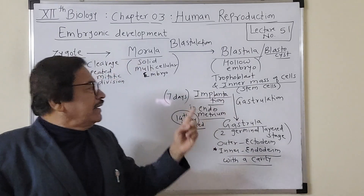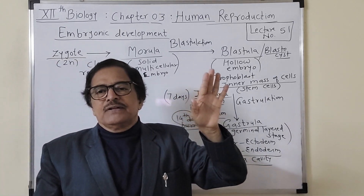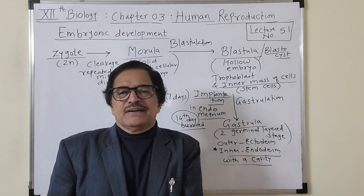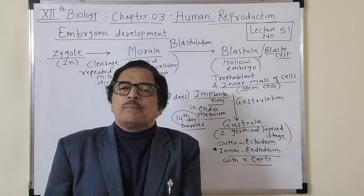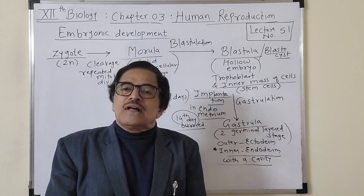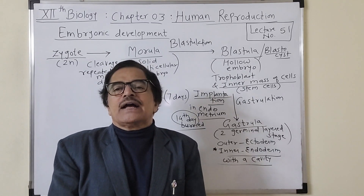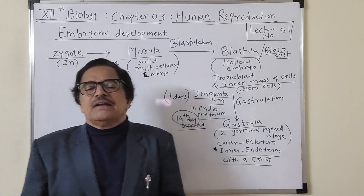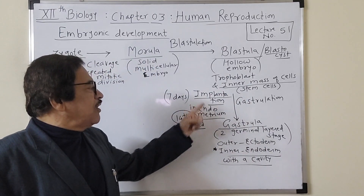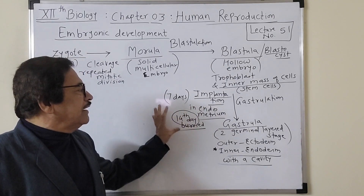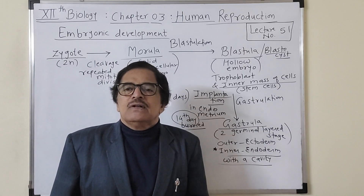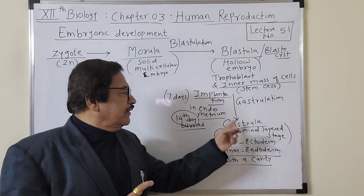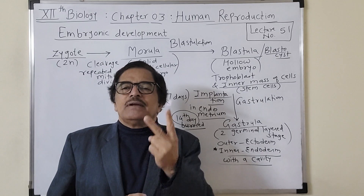Implantation occurs near about seven days after fertilization and formation of the zygote. Over the next week, the embryo gets more and more properly buried into the endometrium. Implantation in the early days of pregnancy is very important. After complete implantation, the blastula embryo is converted into the gastrula embryo, which is the two-germinal-layered stage.